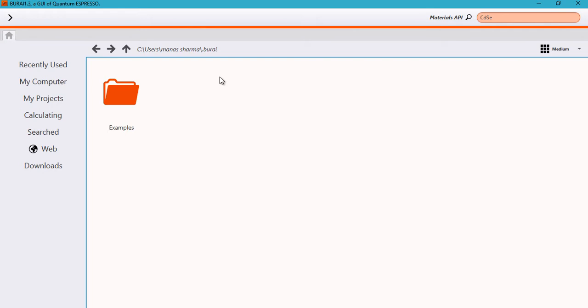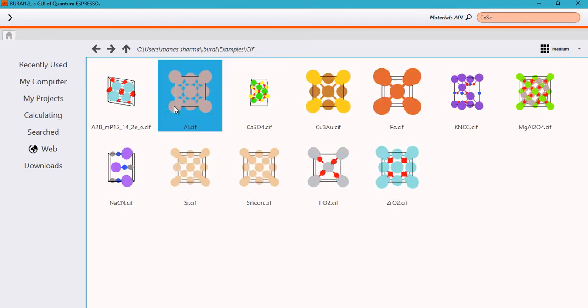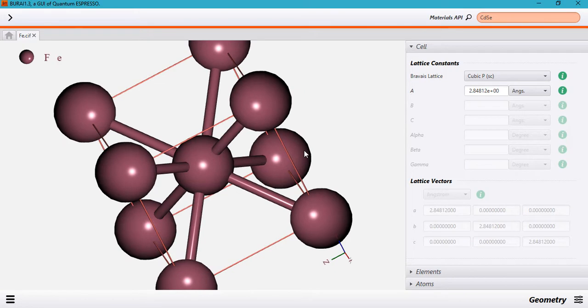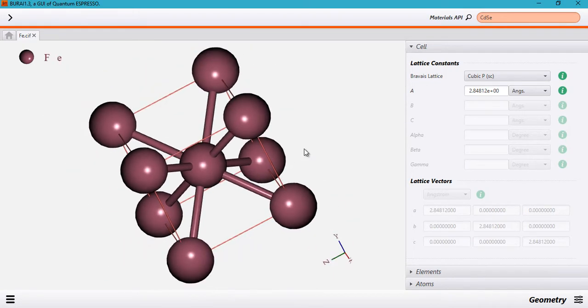So in this tutorial, we'll be learning another aspect of modeling a crystal or a periodic system: how to create supercells and how to create slabs or monolayers. Open your BORAI software and head over to examples and choose any of these, either a CIF file, XYZ, whichever you prefer. In my case, I'll be opening the FE CIF file that we have been working on in the past tutorials.